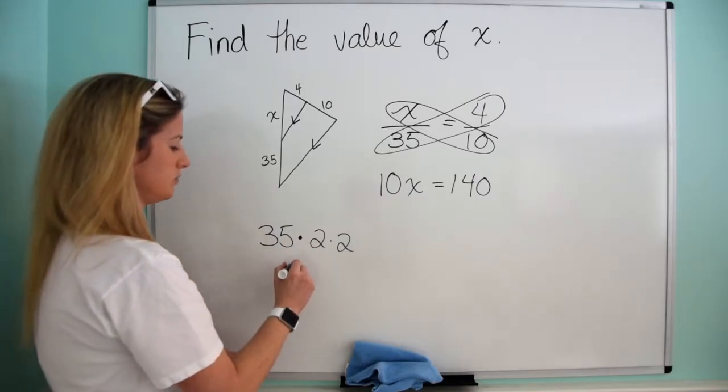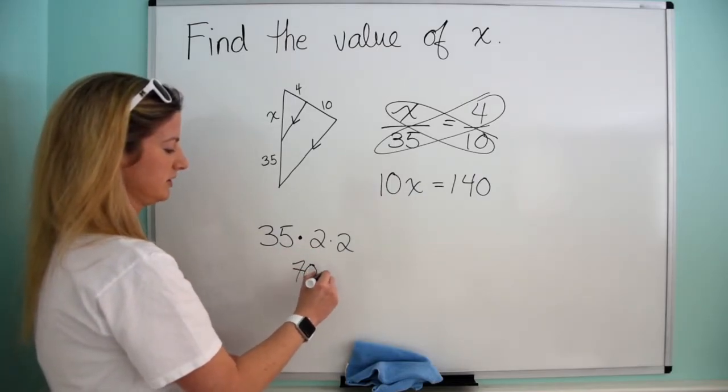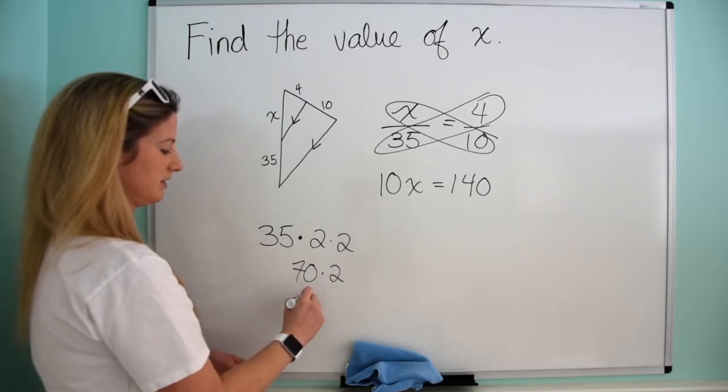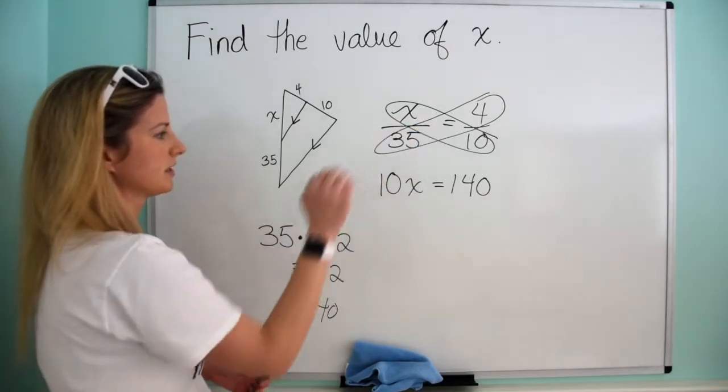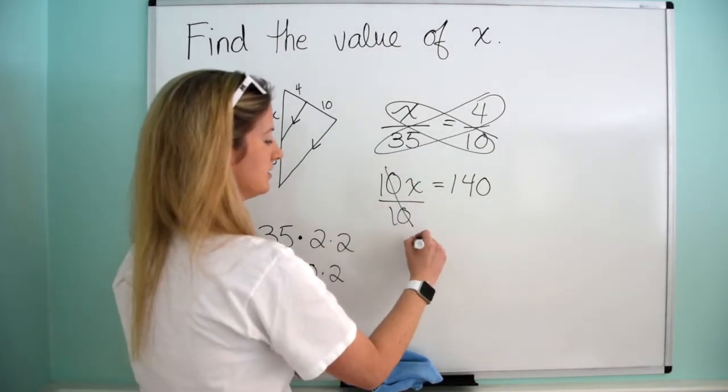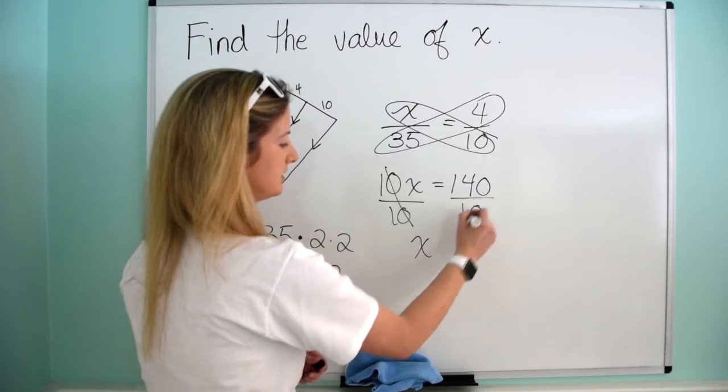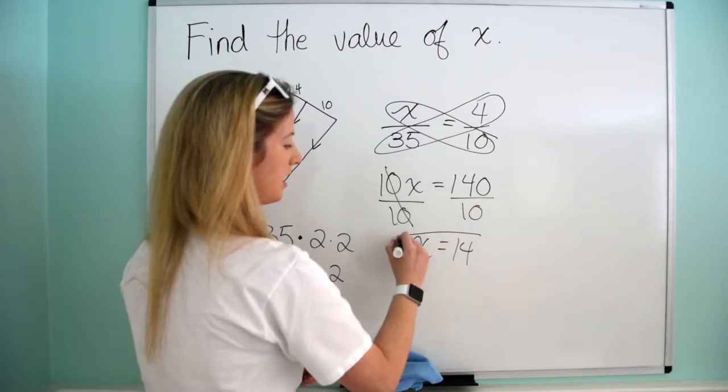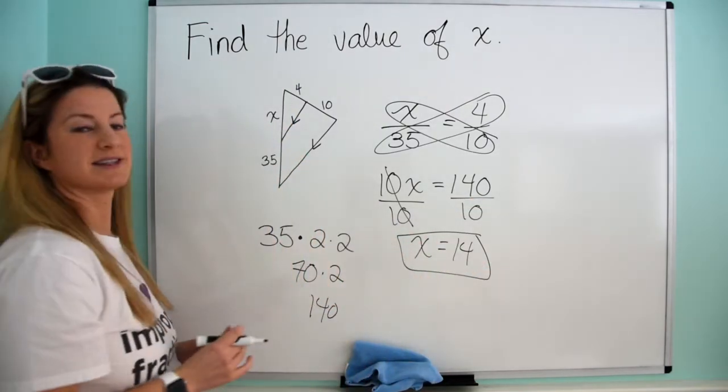So 35 times 2, that's super easy because it's 35 doubled, which I know is 70. And then 70 doubled is just going to be 140. There you go. Now, dividing by 10 is super easy. So just divide by 10, I end up with x, and then 140 divided by 10 is just going to be 14. So in this case, x equals 14.